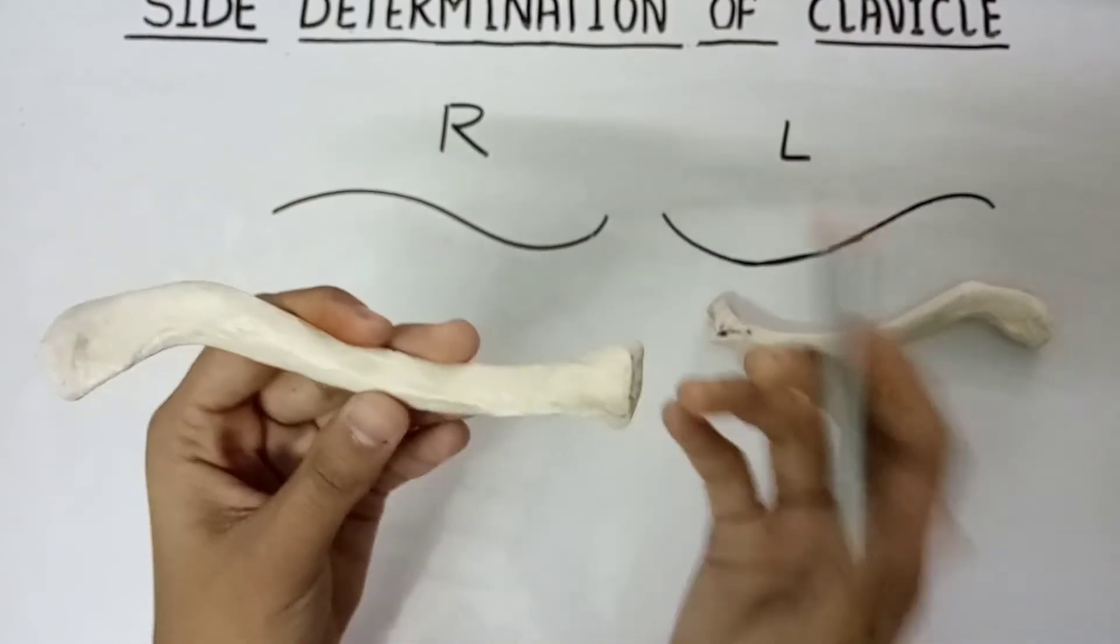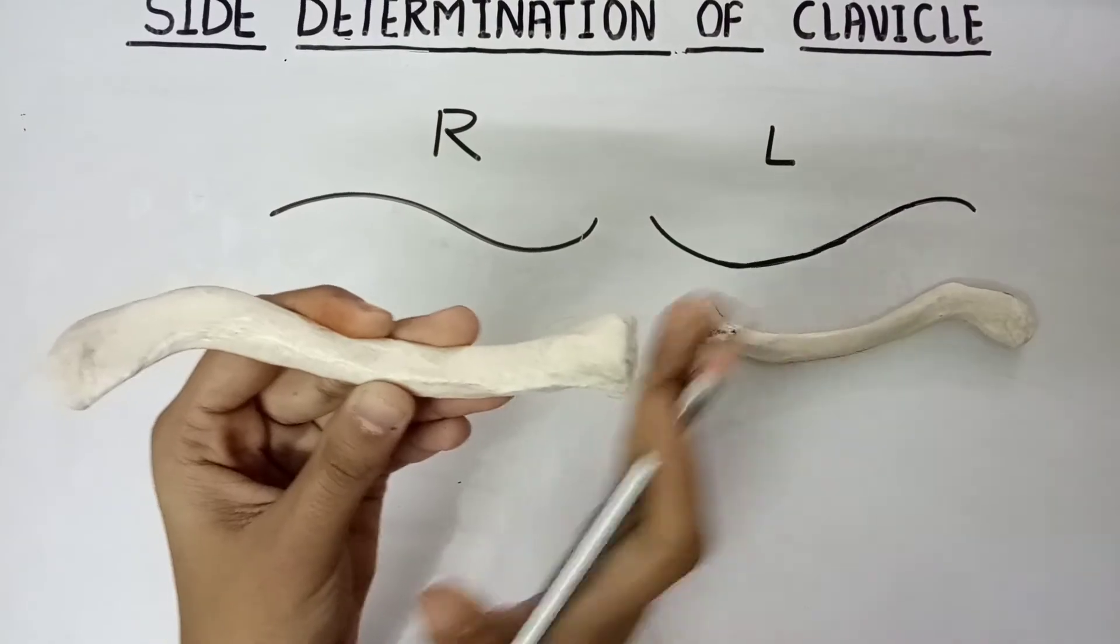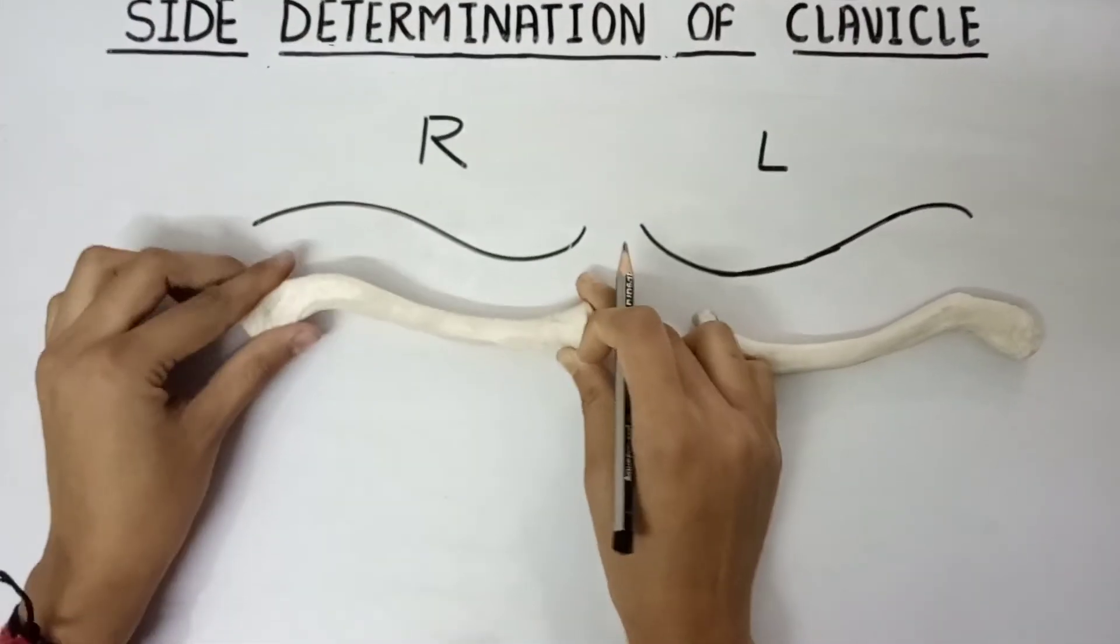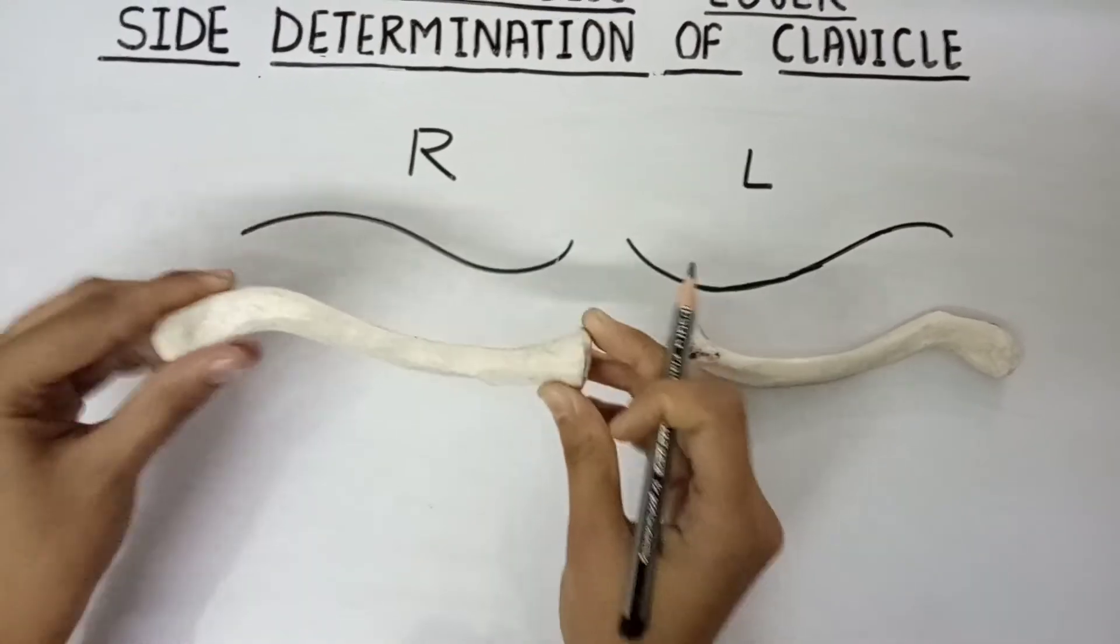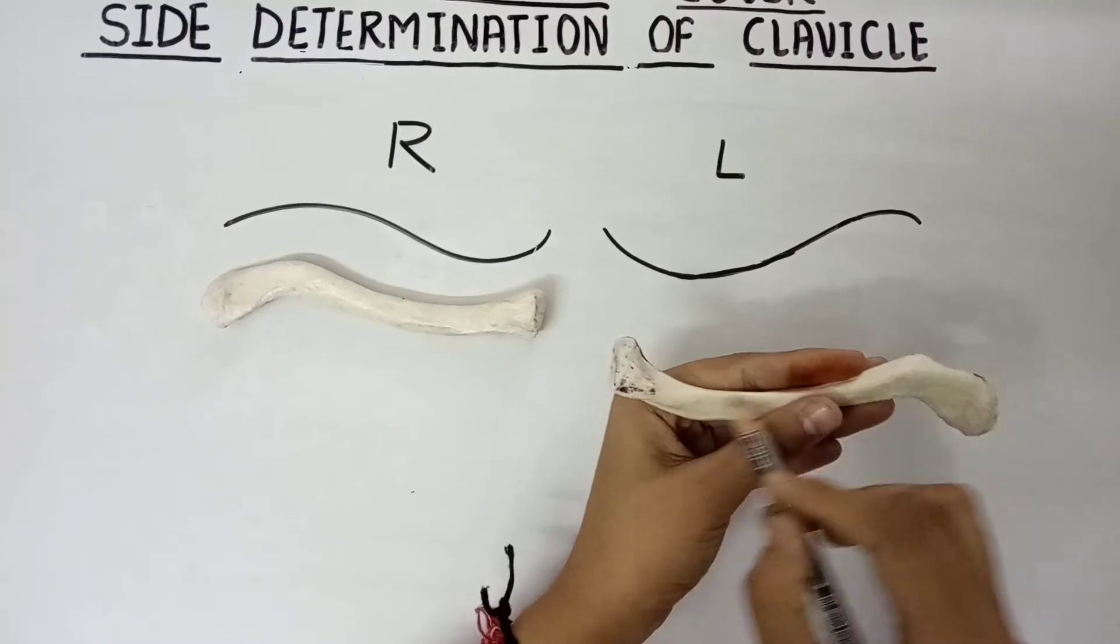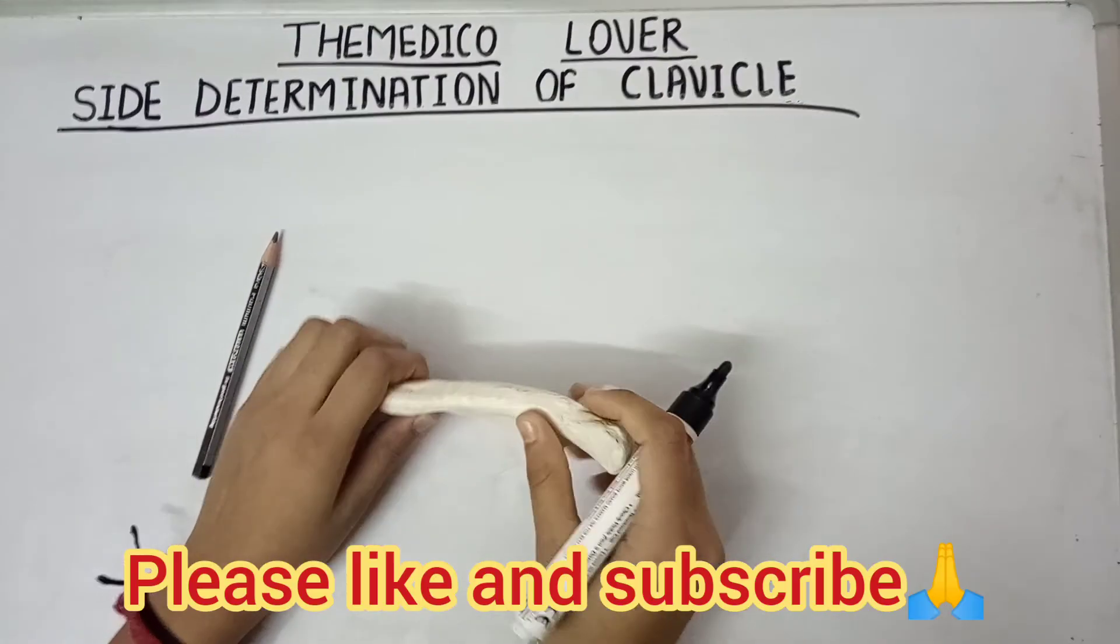Then you can easily determine the side of the clavicle, which one is right and which one is left. So this is the right clavicle which I am holding in my hand. You can also determine this is the left clavicle. Hope you understood well, thanks for watching.